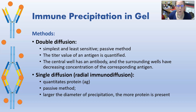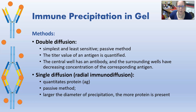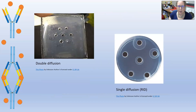You also have single diffusion, also known as radial immunodiffusion. It can quantitate proteins — proteins and antigen. It is also a passive method, and basically the larger the diameter of precipitation, the more protein is present.